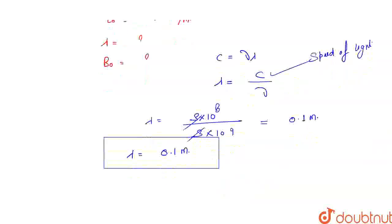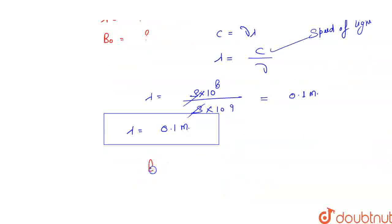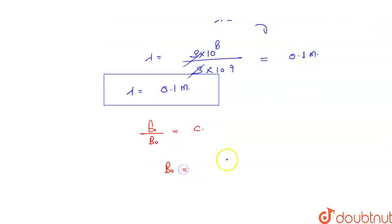Now, for the magnitude of the magnetic field: we know that E₀/B₀ is equal to the speed of light. So to find B₀, we have B₀ = E₀/c.